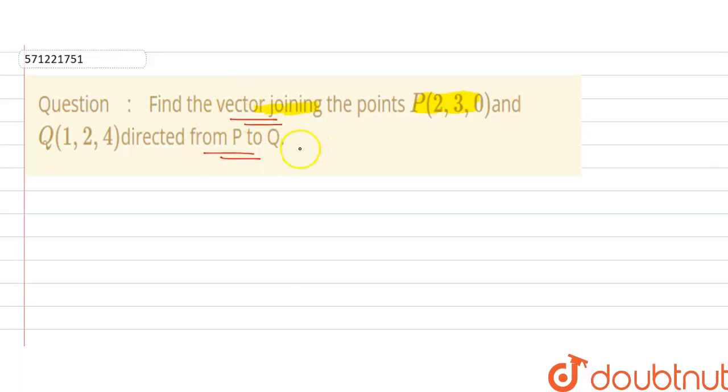We have to find the vector joining the points P(2,3,0) and Q(1,2,4) and the direction is P to Q. So, we need the PQ vector.